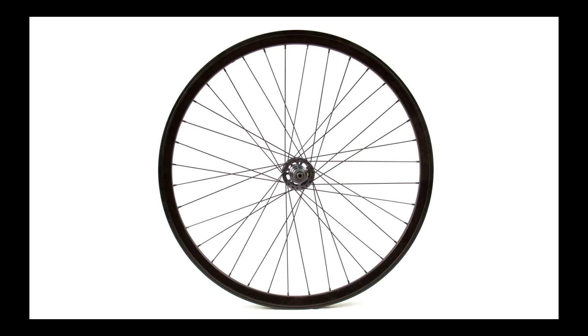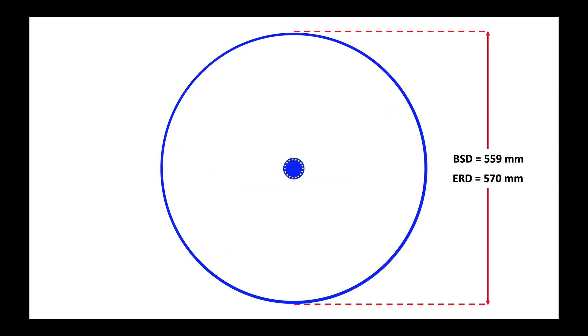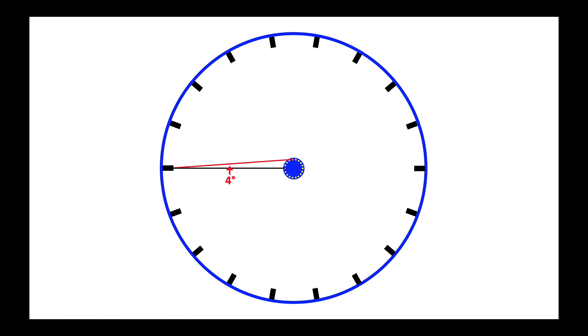Let's look at a typical 36-spoke wheel. We're looking here at a rim with a bead seat diameter of 559 millimeters and an ERD of 570 millimeters. We have a hole flange diameter of 45 millimeters. These are the nipples, 18 of them on the drive side. And here in black we have the radius of the wheel and with a three cross pattern we're going to have a nice convenient, small angle with respect to the radius of only four degrees.